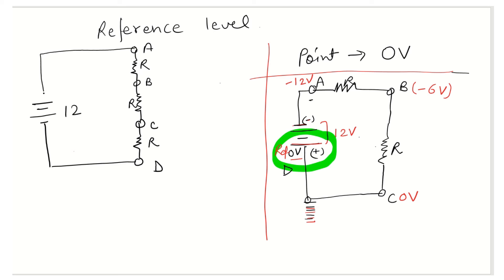Point A is connected to the positive side of the battery. Current flows from higher voltage to lower voltage, and the higher voltage is at the positive side of the battery. Though electrons always flow from negative to positive side, by convention, we take the direction of current flow opposite to electron flow — so current flows from positive side to negative side.